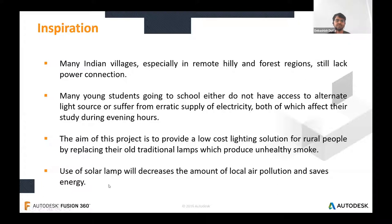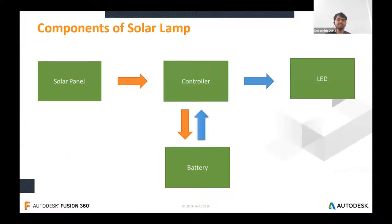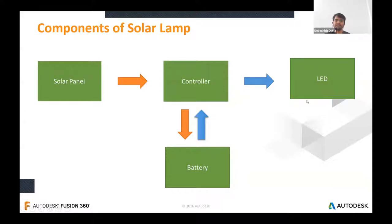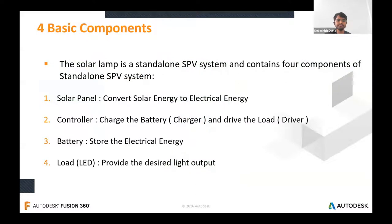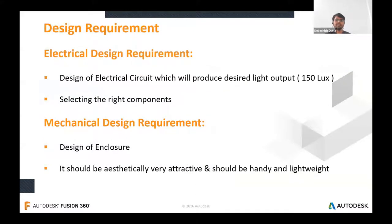The most advantageous part of this solar lamp is it will decrease local air pollution and save energy. The solar lamp is essentially a standalone photovoltaic system. If you clearly understand the solar lamp design, you will definitely be able to design an off-grid solar system for your home. The basic components are: solar panel, controller, battery, and LED. The solar panel converts light energy into electricity, that energy is stored in the battery, and the charging is managed by the controller which also drives the LED.